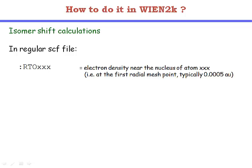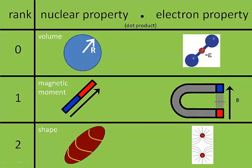Summarizing the isomer shift: we have a nuclear property (mean square radius — a scalar) and an electron property (charge density at the nucleus — also a scalar). Their product gives an energy that can be measured, though you always need to measure it in two materials and compare the difference. This charge density at the nucleus is calculated in every SCF cycle — look for the RTO keyword for every atom. Putting all three types together: for all hyperfine interactions, Wien2K can calculate the corresponding electron properties — the charge density at the nucleus, the magnetic field at the nucleus, and the gradient of the electric field at the nucleus — while nuclear properties come from nuclear physics.